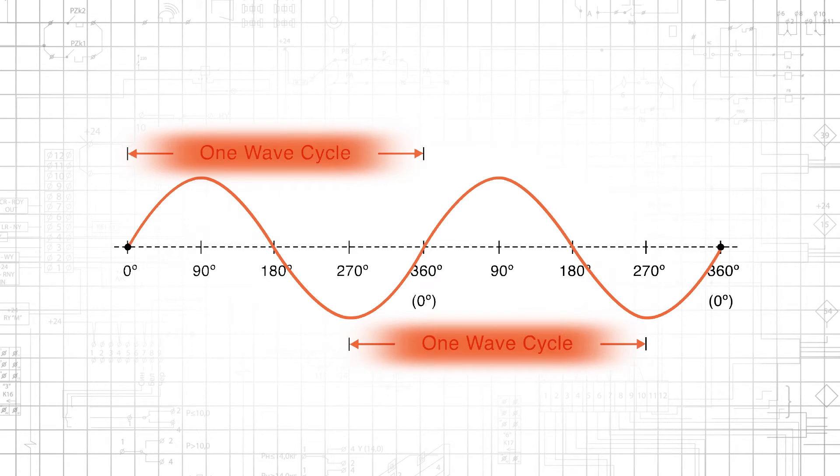Sinusoidal signals occur in repeating cycles, and the number of cycles in one second is equal to the frequency in Hertz.